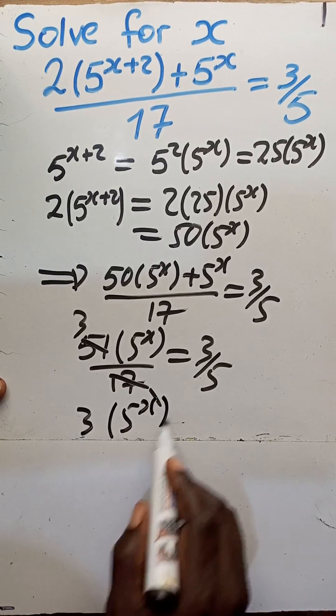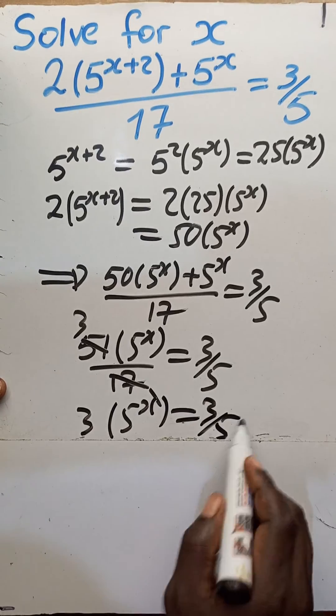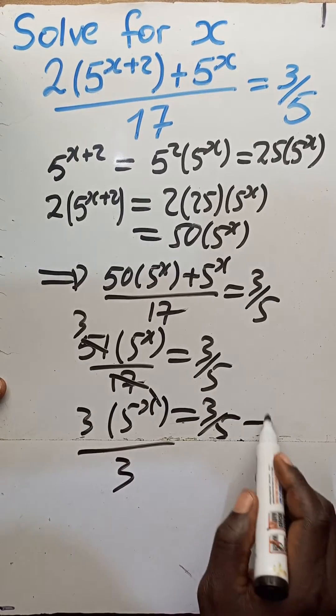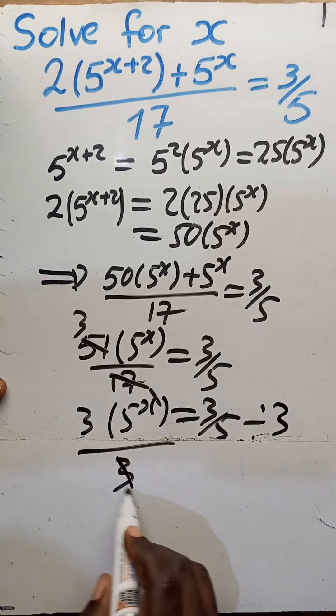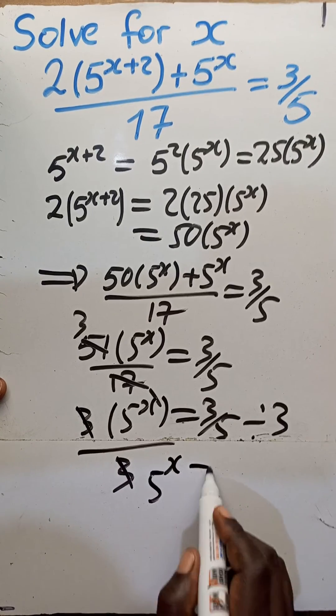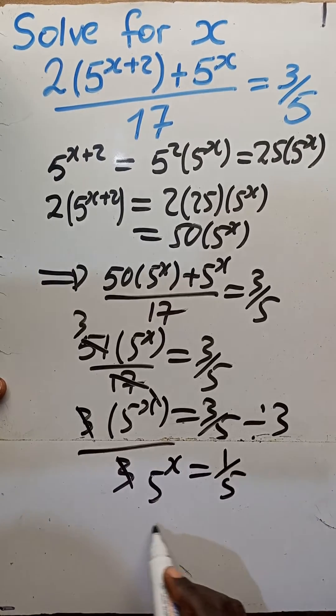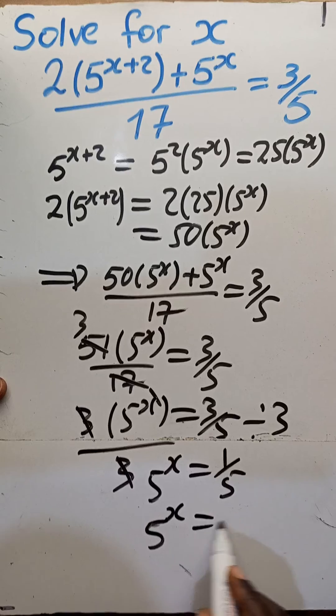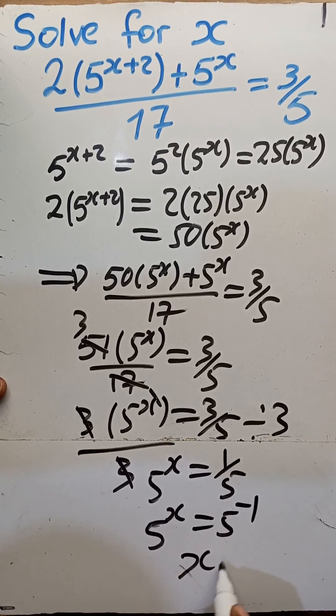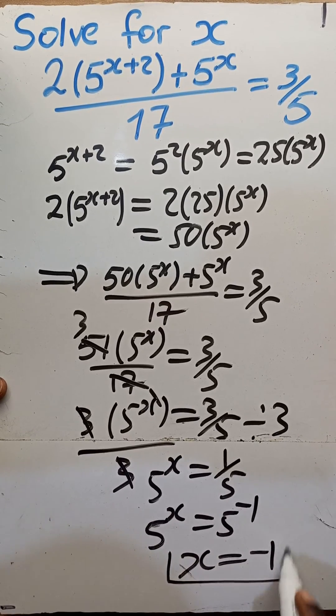If we divide both sides by 3, we have 5 to the x is equal to 1 over 5. 5 to the x is equal to 5 to the negative 1. Automatically, x is negative 1.